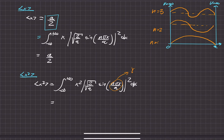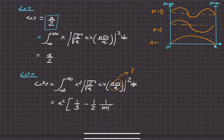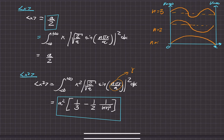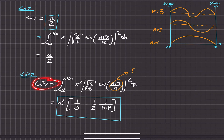For the sake of this video I won't go into the details, but the answer looks something like A squared times a quantity involving one-third minus one over two n pi squared. Notably, if we look back at the expectation value of x, there's no n — the average position is always in the center regardless of energy level. But the expectation value of x squared does contain n, so it changes depending on the energy level.